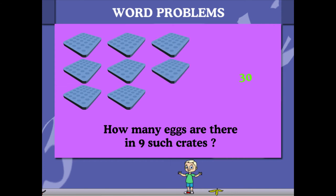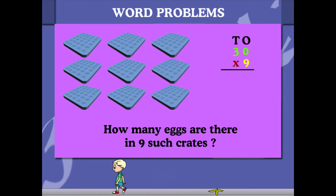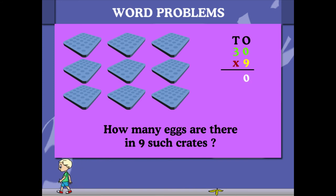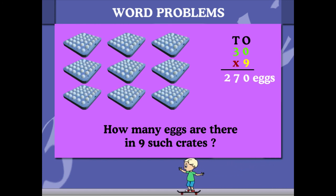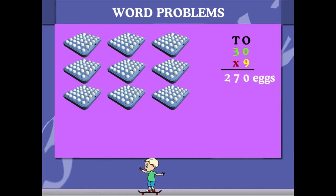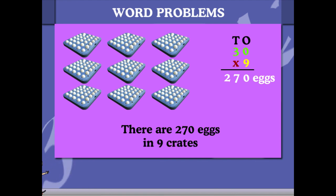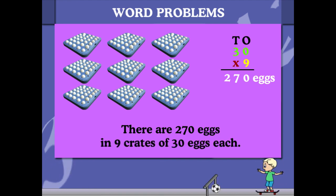Simple, multiply 30 by 9. 0 into 9 is 0. 3 tens into 9 is 27. You get 270. So, there are 270 eggs in 9 crates of 30 eggs each.